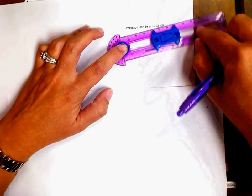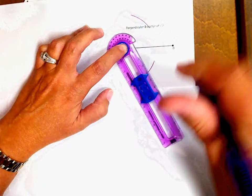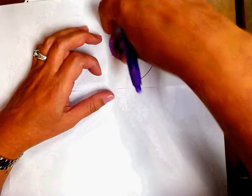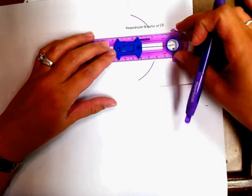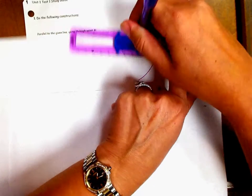You're going to make an arc above the line and an arc below the line. You can make one continuous arc if you prefer that. Then do the same thing using the same setting on the other side. Make an arc above the line and an arc below.